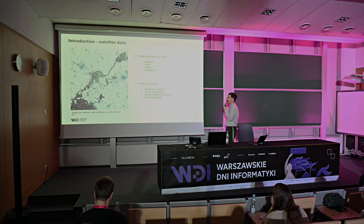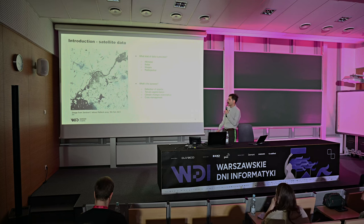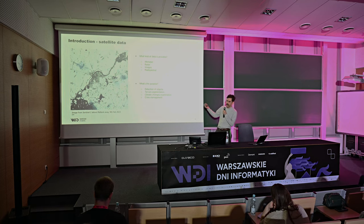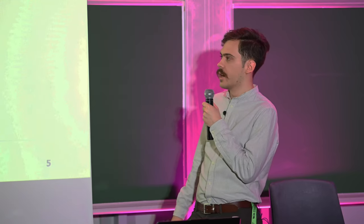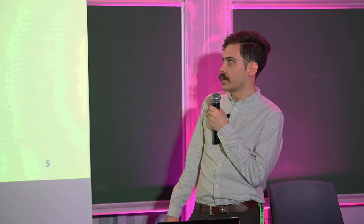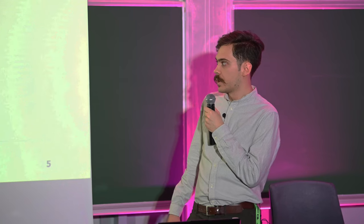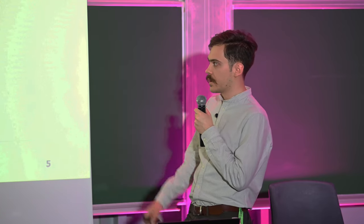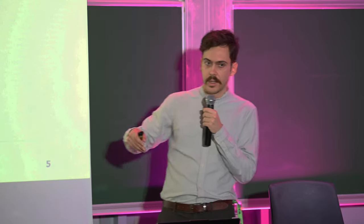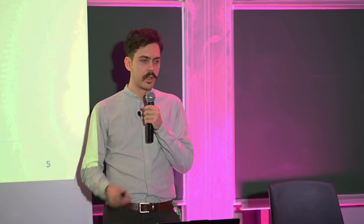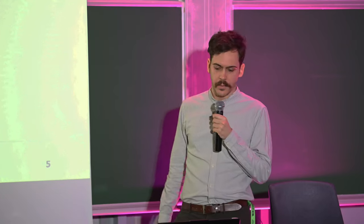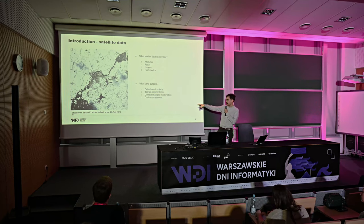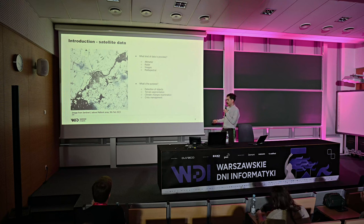What kind of data do these satellites collect? They collect altimeter data, radar data, RGB images, and optical data. The purposes are many — for example: detection of objects, terrain segmentation, climate change examination such as detecting ocean flows and the diminishing of icebergs. And crisis management, which usually requires near real-time processing, which will be explained later.